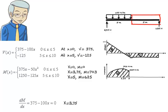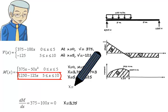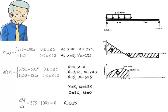Moment in the right segment of the beam where x is between 5 and 10 is given by the equation 1250 minus 125x. This is a line equation. To graph it, let's evaluate the equation at its endpoints. At x equals 5, we get 625. At x equals 10, we get 0. So moment changes linearly from 625 to 0 in this segment, like this.